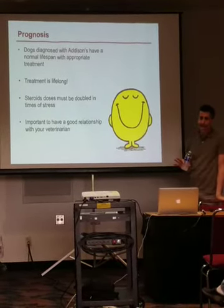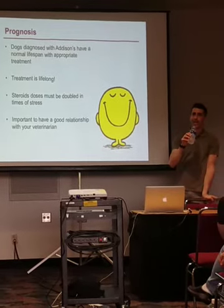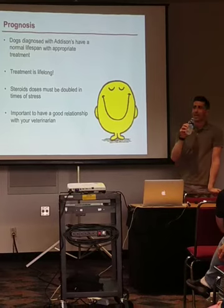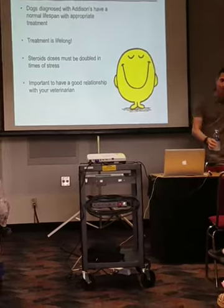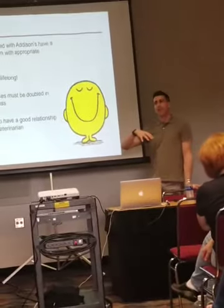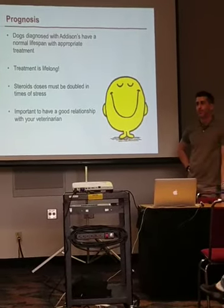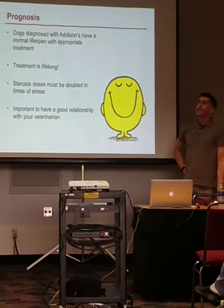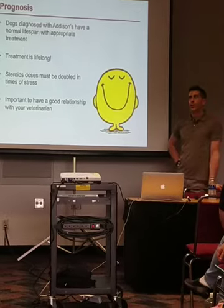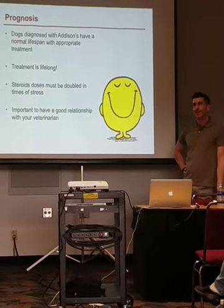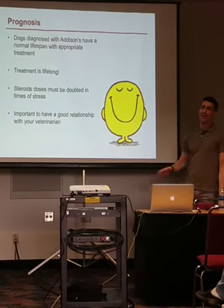That covers Addison's disease. During Q&A, it was noted that approximately 80% of cases are typical and 20% are atypical. Late-onset cases are very rare — usually an atypical dog that's been misdiagnosed. The diagnosis is typically made between 1 and 3 years of age because immune-mediated destruction happens early in life, and once the adrenal glands are destroyed, they never come back.